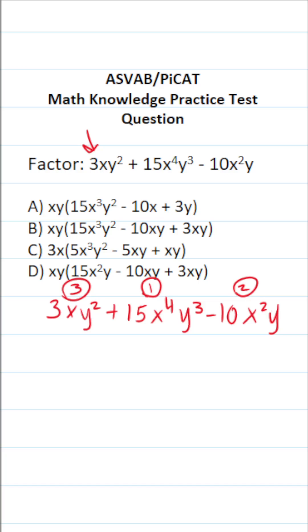So all I'm doing right now is rewriting this. This becomes 15x to the fourth y to the third minus 10x squared y plus 3xy squared.